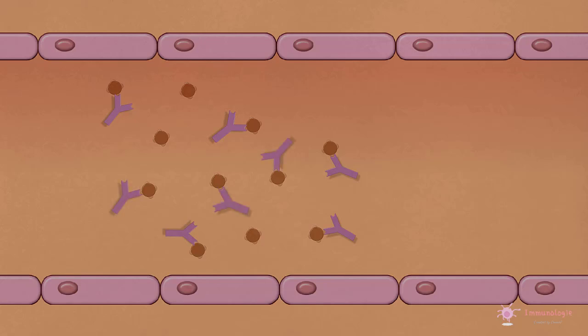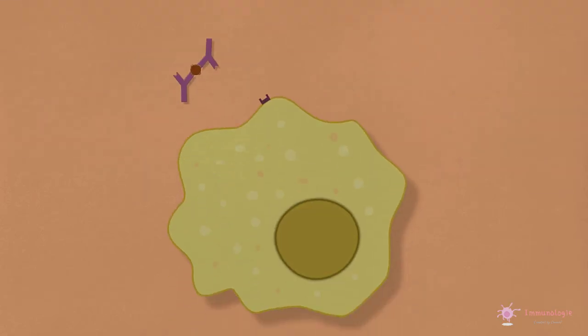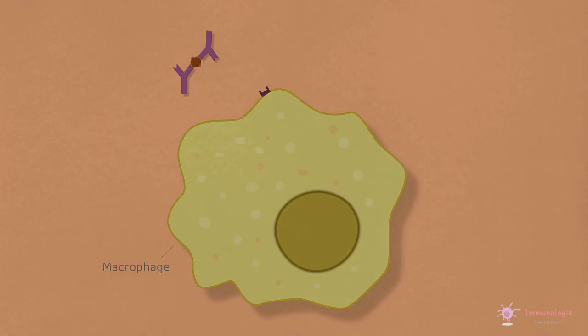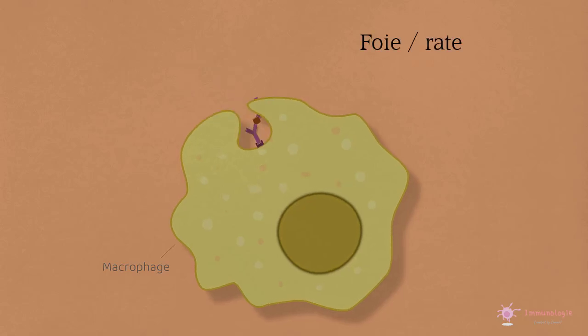Les anticorps se lient et forment des complexes immuns avec l'antigène circulant. Ces complexes sont initialement éliminés par les cellules phagocytaires dont le foie et la rate.